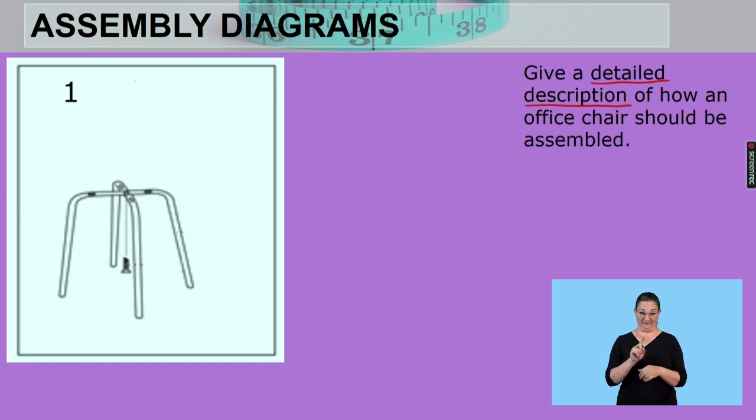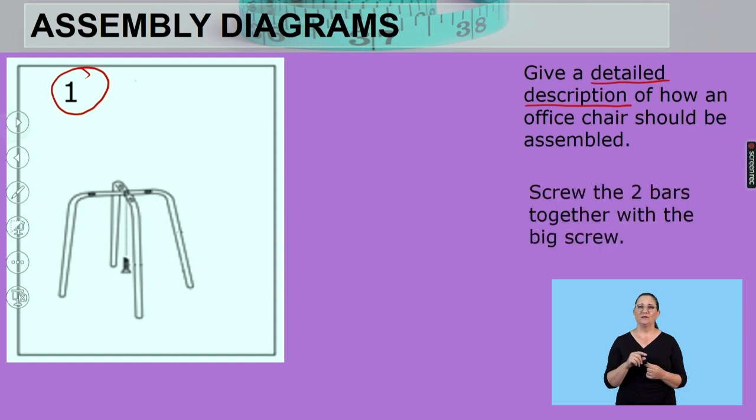Step one. What do we need to do? We need to screw the two bars together with that big screw. The initial one. There it is. Do you see what we're doing there? We're taking that screw, we're taking the two larger bars. This one and that one. Placing them across and using the big screw to tighten that in. That's step one.